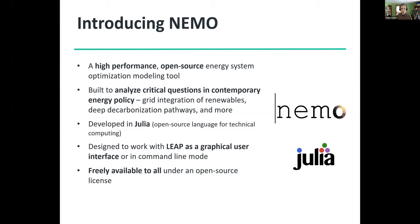What we're trying to do by attaching it to LEAP is to bring additional optimization capabilities within the LEAP framework. We've built NEMO with a focus on analyzing critical and emergent questions in contemporary policy — things like modeling of grid integration of variable renewable energy, deep decarbonization pathways, analyses of robust energy futures under climate change, and more. We built this tool in an open source language called Julia, a cutting-edge language intended for high performance mathematical computing, and we're making it freely available to everybody under an open source license.